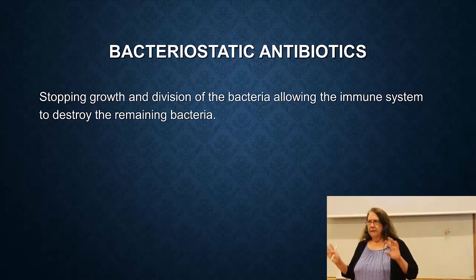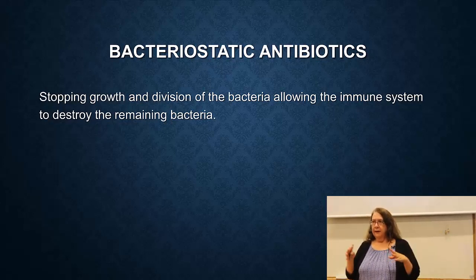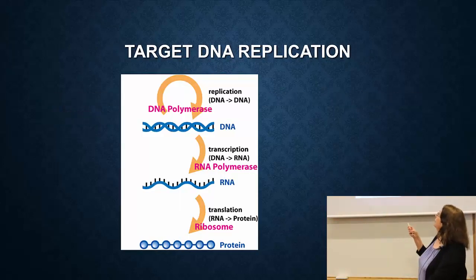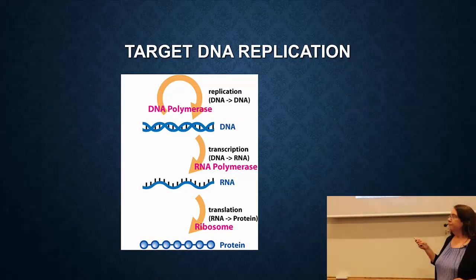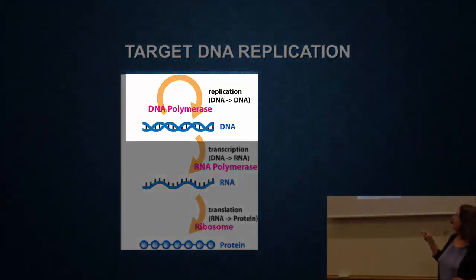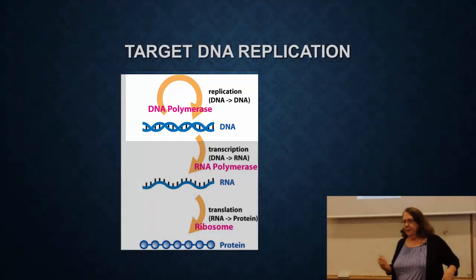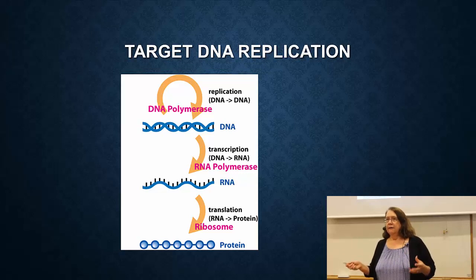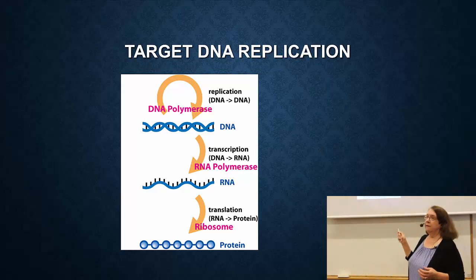Now we're going to talk about different types of antibiotics and how they work. Last week I talked about penicillin affecting the cell wall, and we'll come back to that. Today I want to talk about other antibiotics. The first antibiotic I want to refer to targets DNA replication. You have DNA, goes to RNA, goes to protein — we're going to focus on DNA. When the bacteria wants to divide and make a new cell, it has to copy all its DNA, and it uses an enzyme called DNA polymerase to do that.